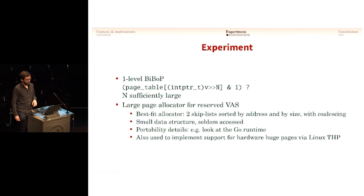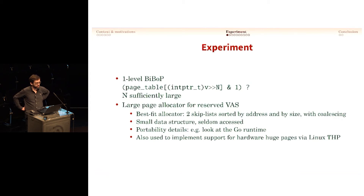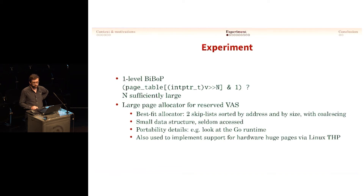The implementation is a page table with a one-level big bag of pages — essentially you take your pointer, look at the most significant bits, and look directly in a table for the value. If you want to do that on a 64-bit or 48-bit address space, you need N sufficiently large, so you need a large page allocator. You need to reserve memory in contiguous chunks of large blocks, like 64 megabytes or 256 megabytes of reserved address space, not committed. For portability, you can look at what the Go runtime does, which is an elegant source to look at.